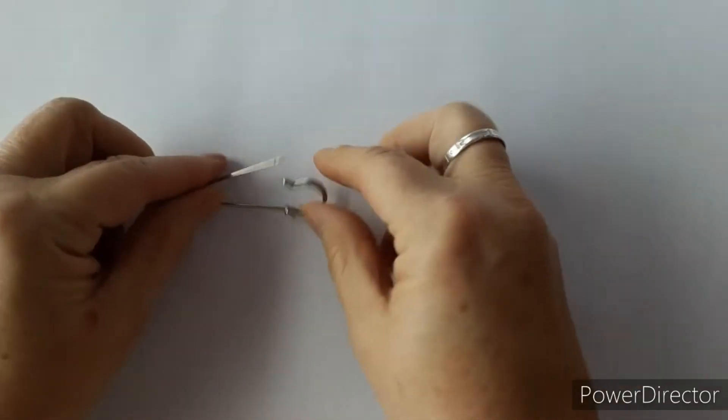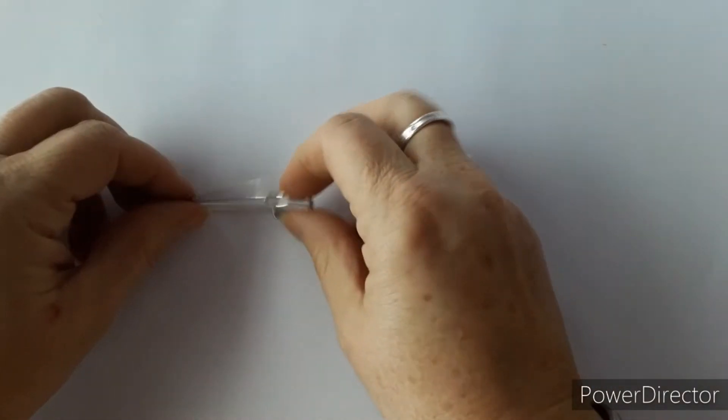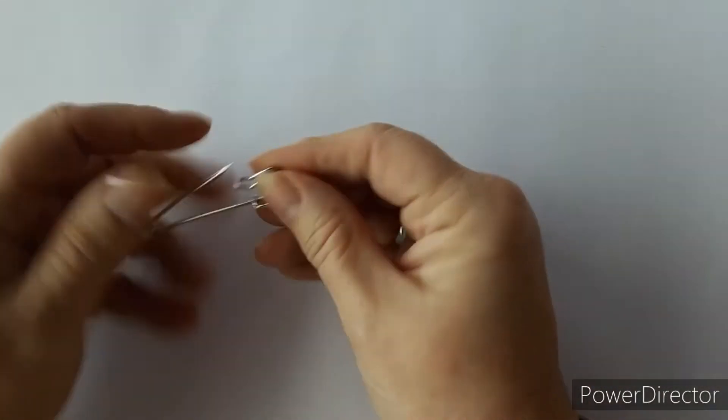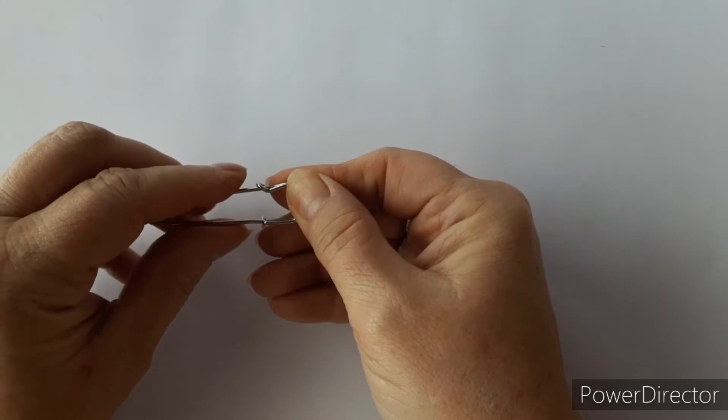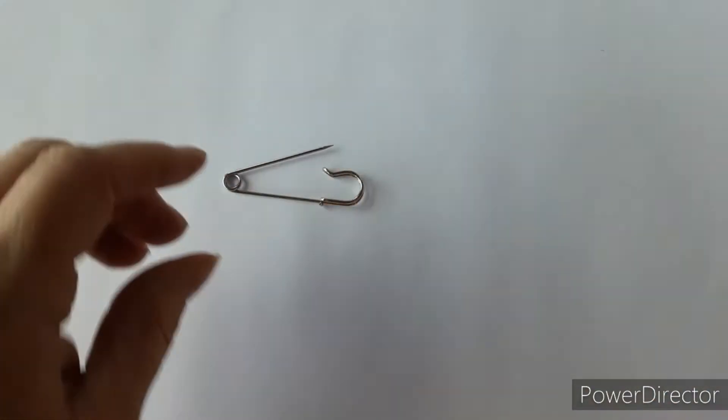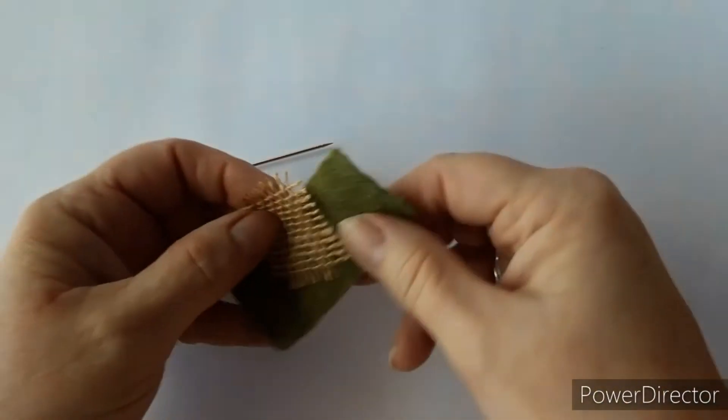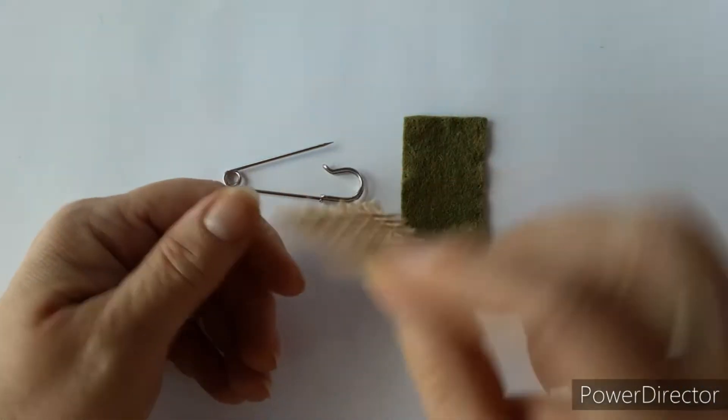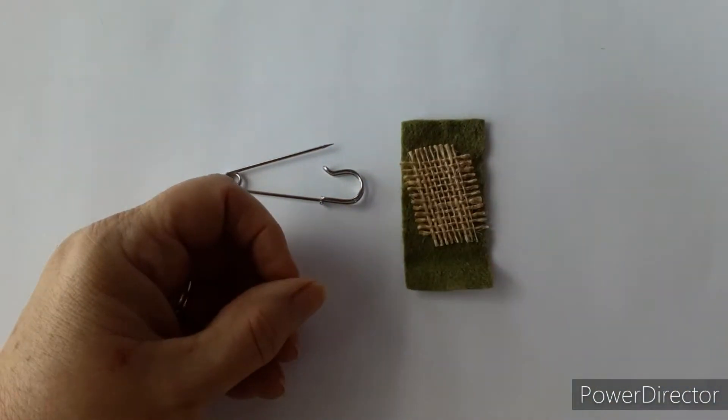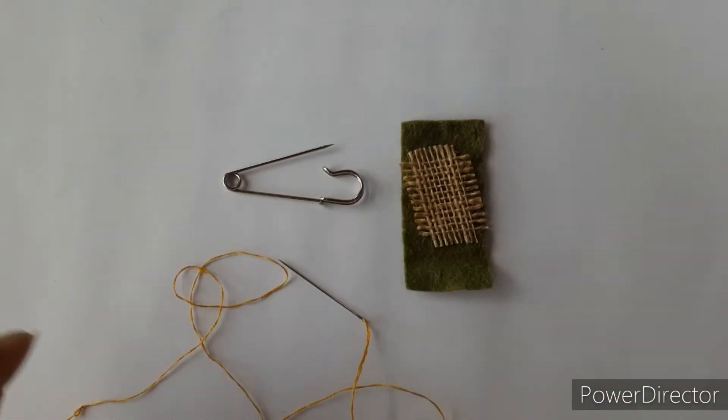To begin with, take your kilt pin. There's the top bit which is the opening and then the bottom piece is where we're going to fasten the material. The material we're using has some felt and we've got a small piece of hessian. Get the needle and pin which we will use to secure.